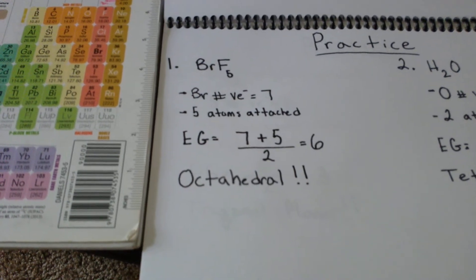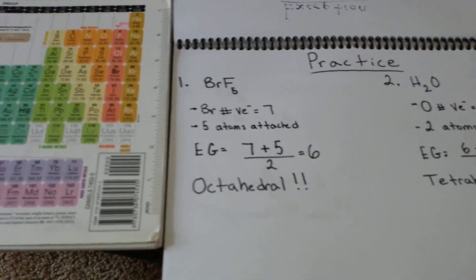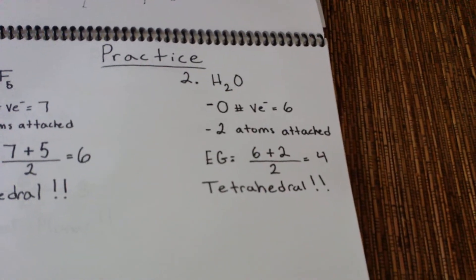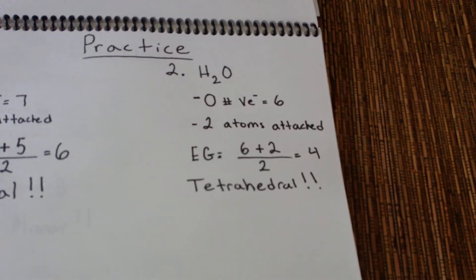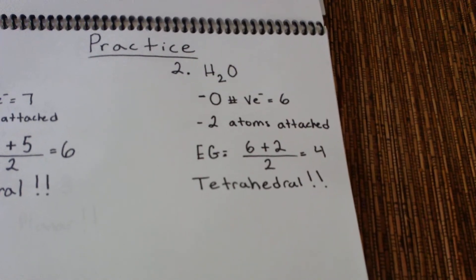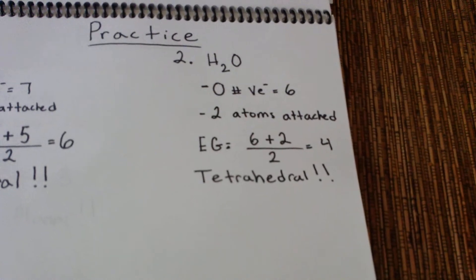So the next example would be H2O. So we know that oxygen is the central atom which has six valence electrons and two atoms attached, two hydrogens. So that's six plus two divided by two, which is four, and that's tetrahedral.